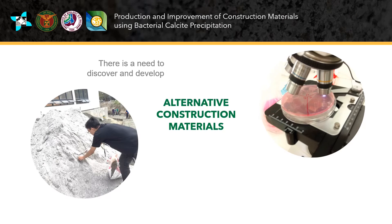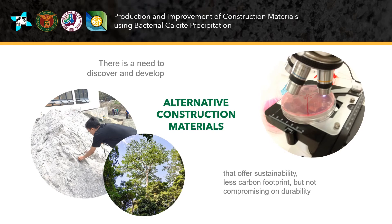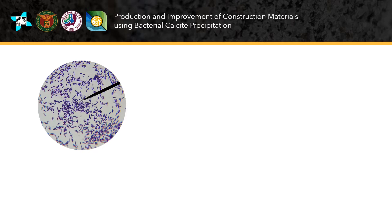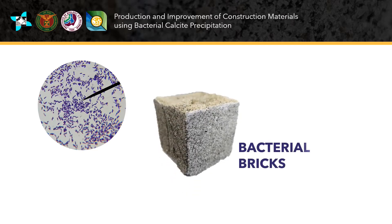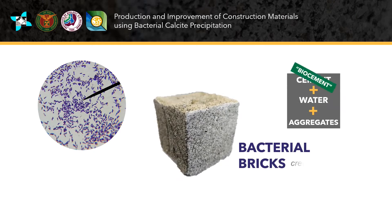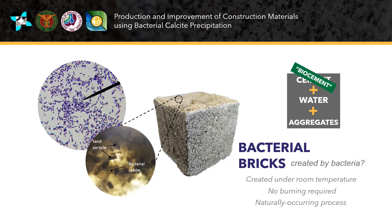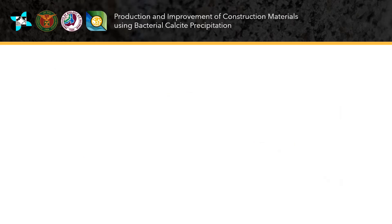Therefore there is a need to discover and develop alternative construction materials that offer sustainability with less carbon footprint without compromising durability. We have found the solution among microorganisms. In our research project, we will generate bricks by replacing cement with bio-cement produced by bacteria. This process is more environment friendly and, unlike cement which is produced under very high temperature and uses high energy input, can be done under room temperature.